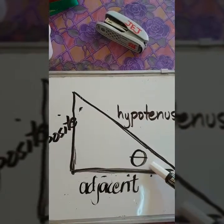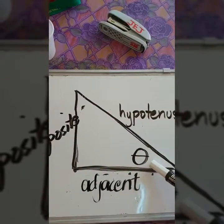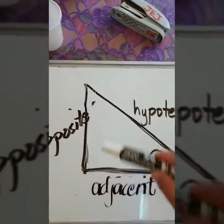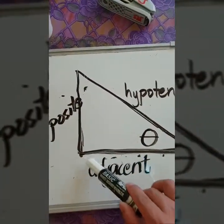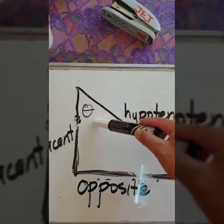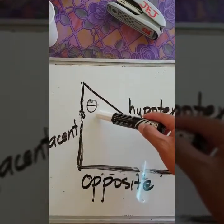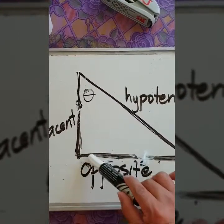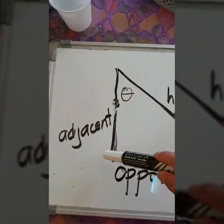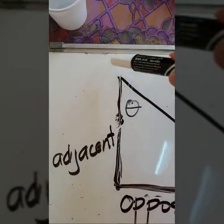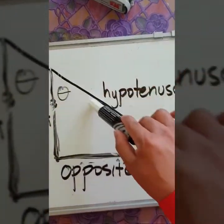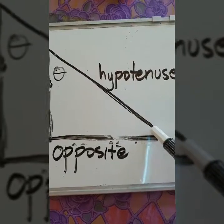Considering theta, which is the reference angle, this side is the opposite side and this side is the adjacent side. If theta is placed here, this side will be the opposite side and this side will be the adjacent side. The hypotenuse will still be the longest side in a right triangle.